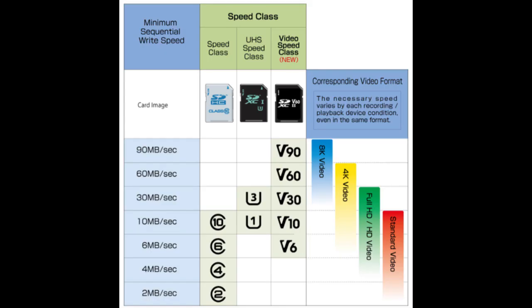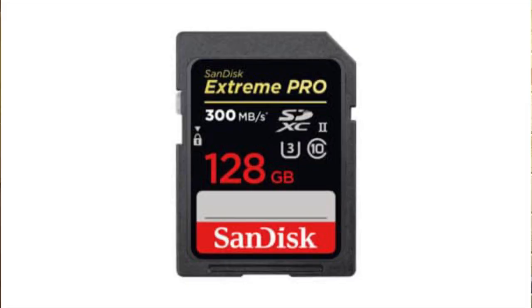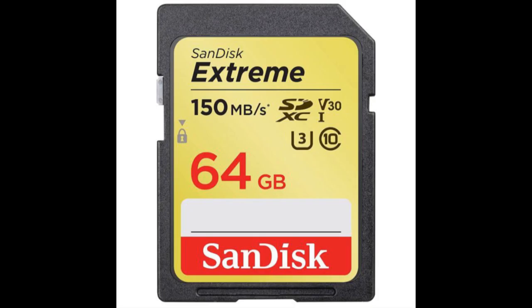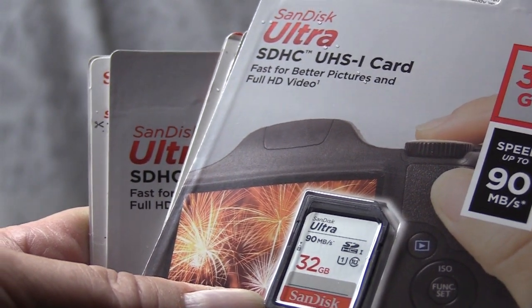For video, most cards will have a V on them. They come in classes V6, V10, V30, V60, and V90 — those are the primary ones. You can get cards that write 300 megabytes per second, but they cost $250 a card. For most of us, a V30 or V60 is primarily what we're going to need — that's 30 or 60 megabytes per second.